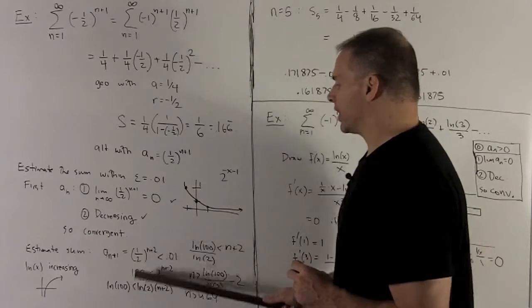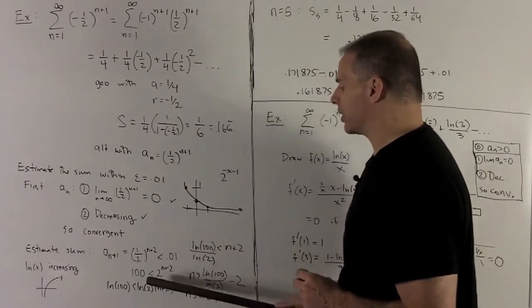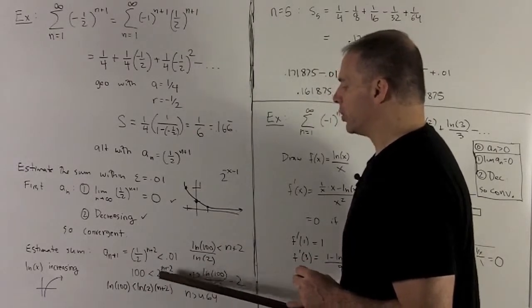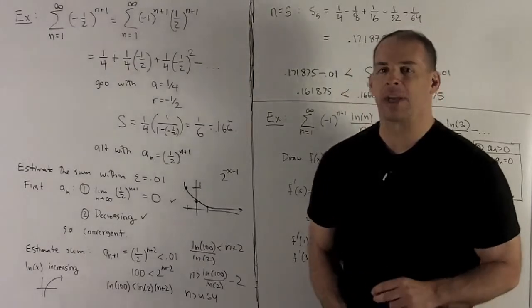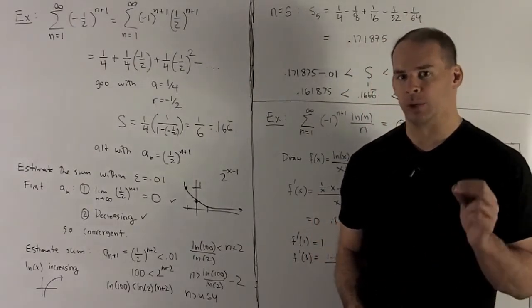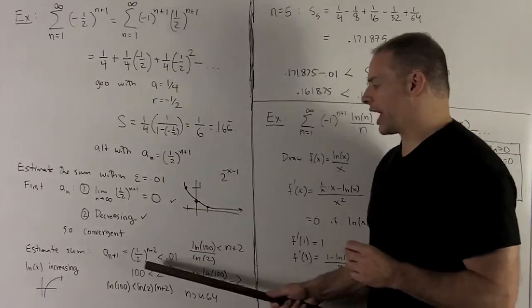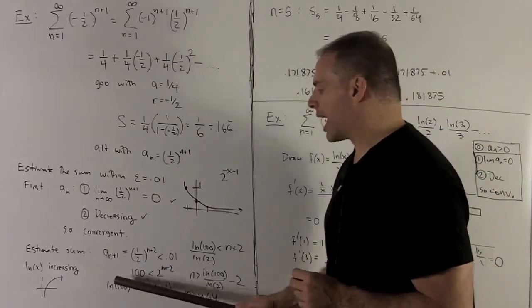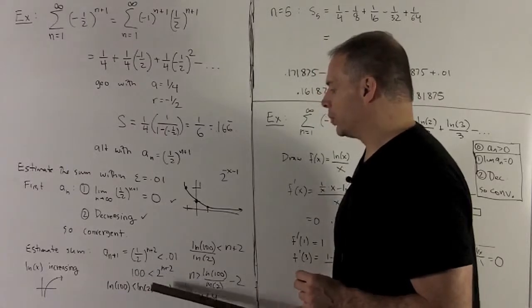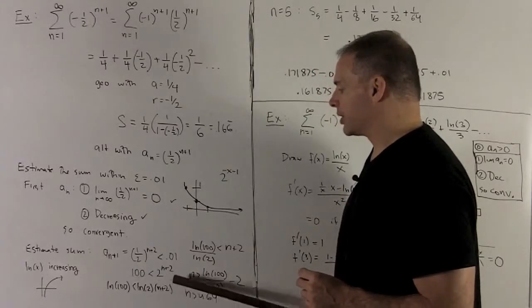So I'm just going to push things to the other side of the inequality, and that will give me 100 is less than 2 to the n plus 2. And how do I get the n plus 2 out of that? Well, that's what we use logarithms for. So if I take the natural log of both sides, I'm going to wind up with natural log of 100 less than or equal to natural log of 2 times n plus 2.